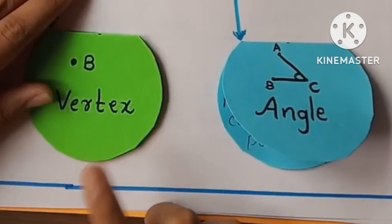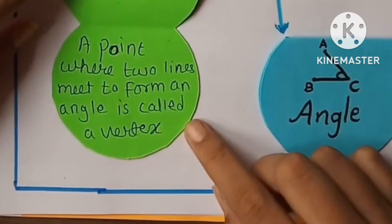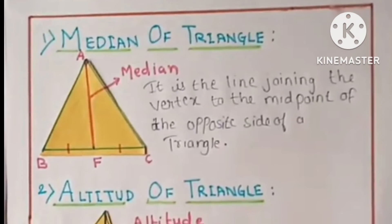And the third part is vertex, and here is the definition of vertex.